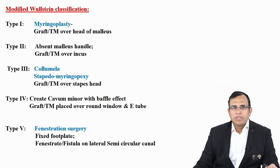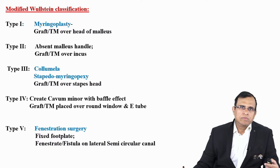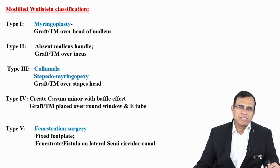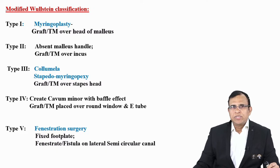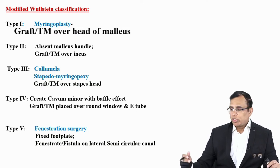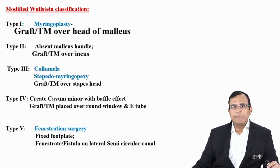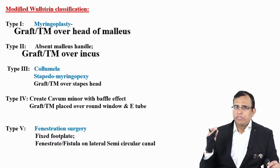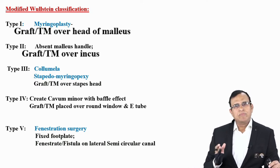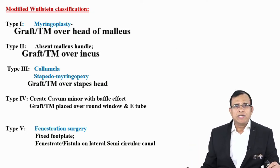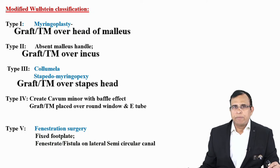This classification was given by Wullstein, so it's called the Wullstein classification or modified Wullstein classification of tympanoplasty. Type 1 is also called myringoplasty — we place the graft on the tympanic membrane over the head of the malleus (the first ossicle). In Type 2 we place the graft on the second ossicle, the incus. In Type 3 we place the graft on the third ossicle, the head of stapes. So Types 1, 2, 3 match the three ossicles — very easy to remember.